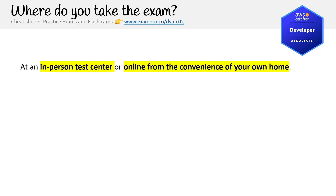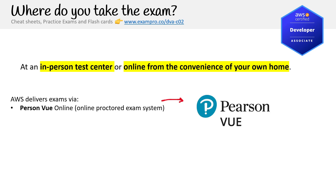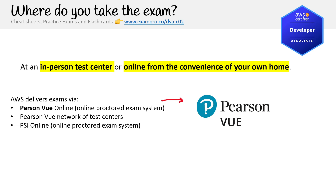You can take this exam at an in-person test center or from the convenience of your own home. AWS delivers exams via Pearson VUE — you may know Pearson as the textbook company. Pearson VUE is their proctored exam system and they partner with test centers — basically schools or private facilities that can host the actual exams. If you have the option, I would do it at a test center because it's so much less stressful — the environment is controlled. At home, your internet can go out or they might not like something in your background. PSI Online used to be an option for AWS but they've fully dropped PSI, so now it's just Pearson VUE.